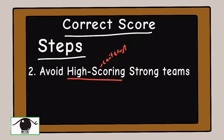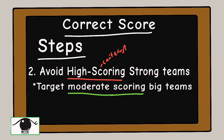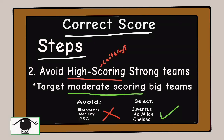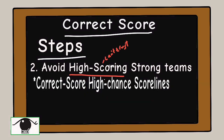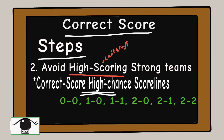The second thing you need to do is avoid any match where the stronger teams score a lot of goals on average. The reason why you need to avoid them is: to win with correct score, you need to target the low score options if you want to raise your chances of predicting right. Choosing the low score options means selecting the common scorelines that football matches produce the most.